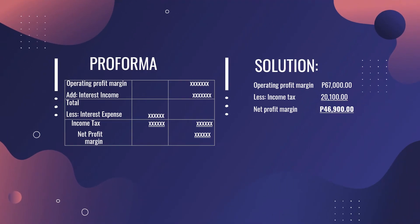To compute the net profit margin, the pro forma is: Operating Profit Margin plus Interest Income, less Interest Expense, less Income Tax equals Net Profit Margin. For XYZ Trading's income statement, there is no interest expense — only income tax is deducted. So 67,000 (operating profit margin) less income tax of 20,100 gives a net profit margin of 46,900.